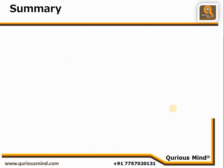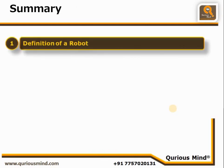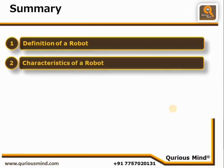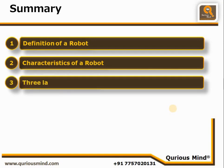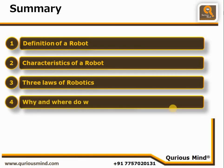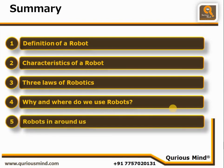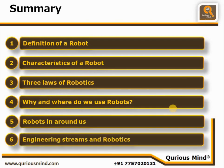In this video, we first defined the robot. We then talked about various characteristics of a robot, which increased our understanding of what a robot is. Then we looked at the three laws of robotics, which are essentially laws for the robotics designer. Then we spoke about various places where we use robots and why. We looked at different industries where robots are already employed, and finally the engineering streams connected with robotics. With this, we come to the end of this video, and from our next videos we will start building our robots. Thank you.